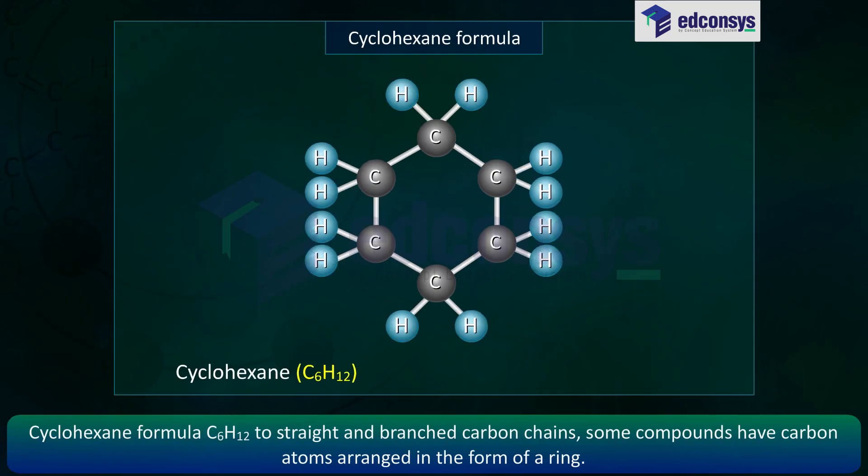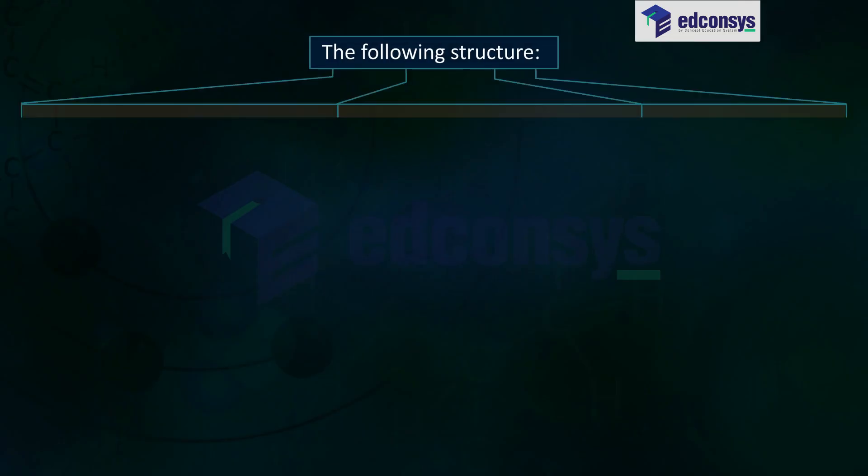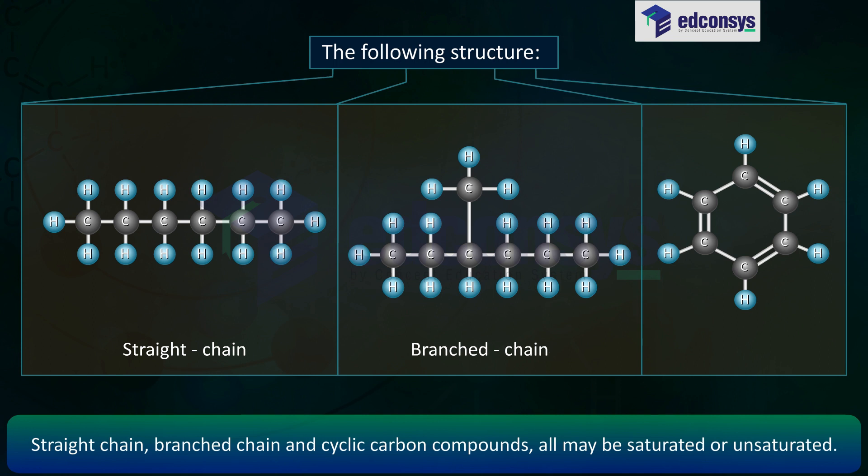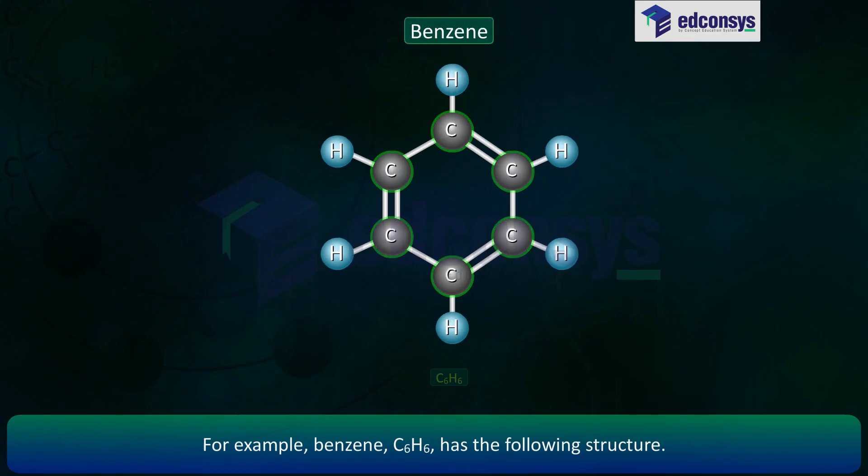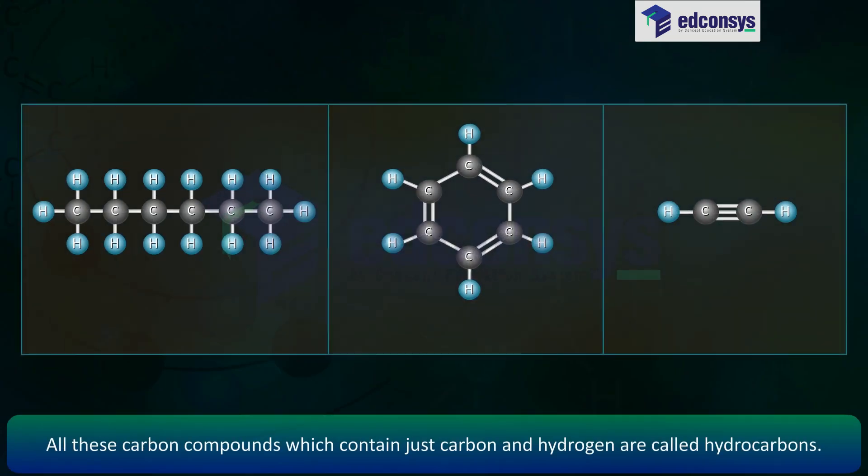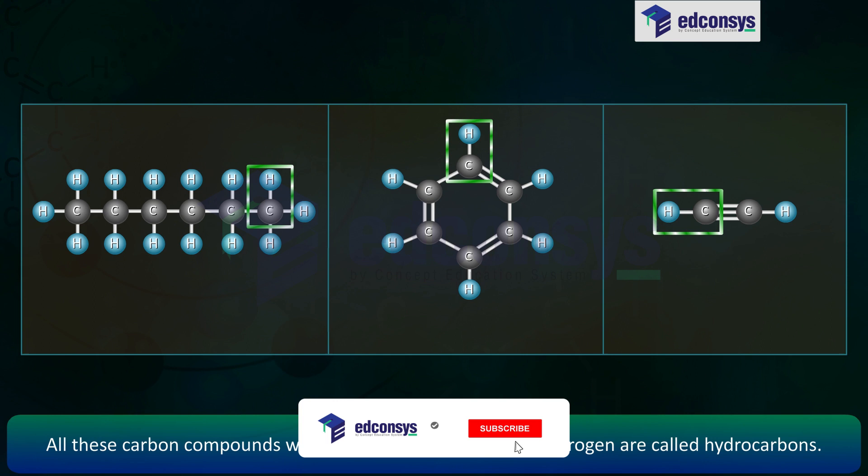Cyclohexane formula C6H12. Some compounds have carbon atoms arranged in the form of a ring. Straight chain, branched chain and cyclic carbon compounds all may be saturated or unsaturated. For example, benzene C6H6 has the following structure. All these carbon compounds which contain just carbon and hydrogen are called hydrocarbons.